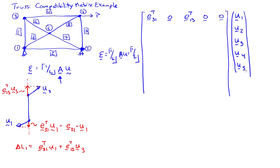If we go to bar 2, we're going to have U1 acting on the vector E21 transpose, and we'll have U2 acting on the vector E12 transpose. Added together, that's going to give me the change in length. There's only two entries per row, and they should have swapped subscripts.